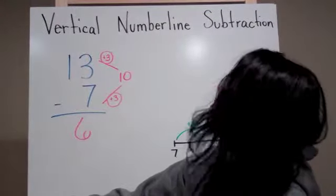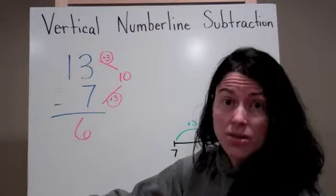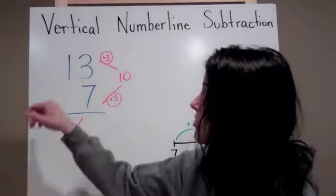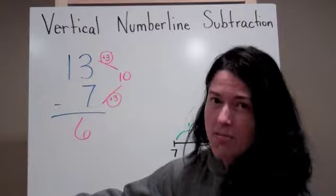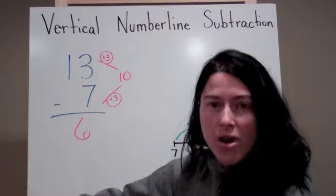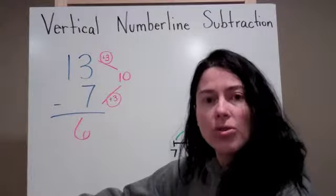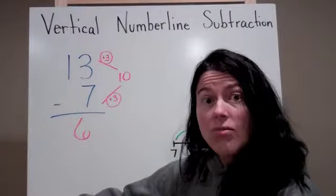Today we're going to talk about the vertical number line and how to use it in subtraction. Here I have this problem of 13 minus 7. This is pretty common. But have you ever thought about how you could use the vertical number line in order to solve this?